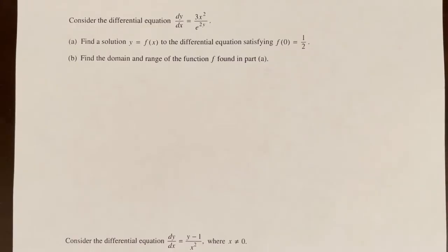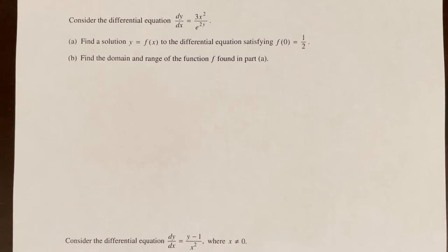Consider the differential equation dy/dx = 3x²/e^(2y). Part A: find a solution y = f(x) satisfying the initial condition f(0) = 1/2.